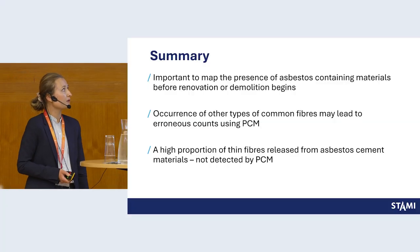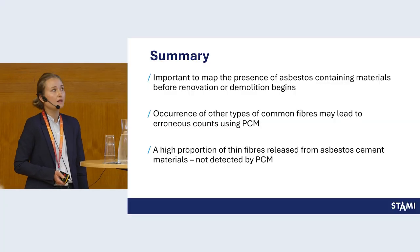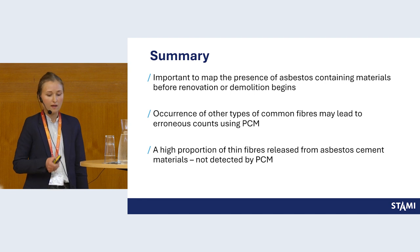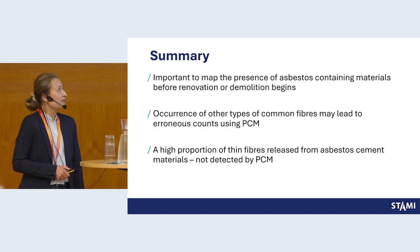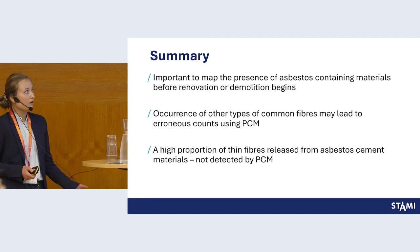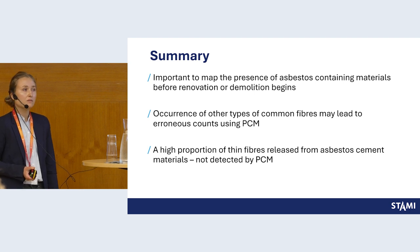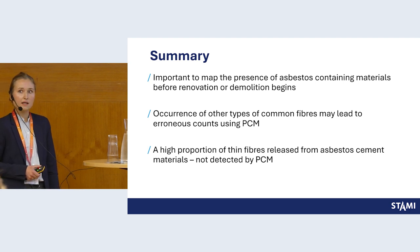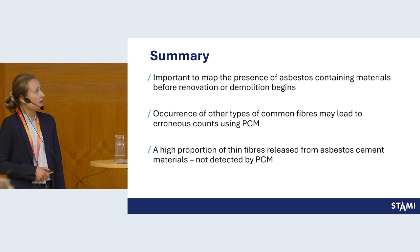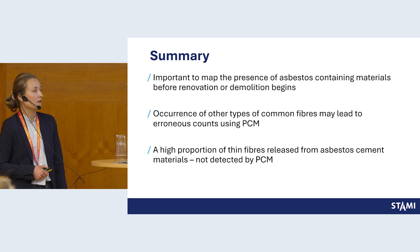To sum up: it is important to map the presence of asbestos-containing materials in order to protect workers. The occurrence of other common fiber types — such as calcium sulfate fibers — may lead to error counts using the PCM method. A high proportion of thin fibers was found in asbestos cement materials, and this is probably true for many materials dominated by chrysotile. Thank you.